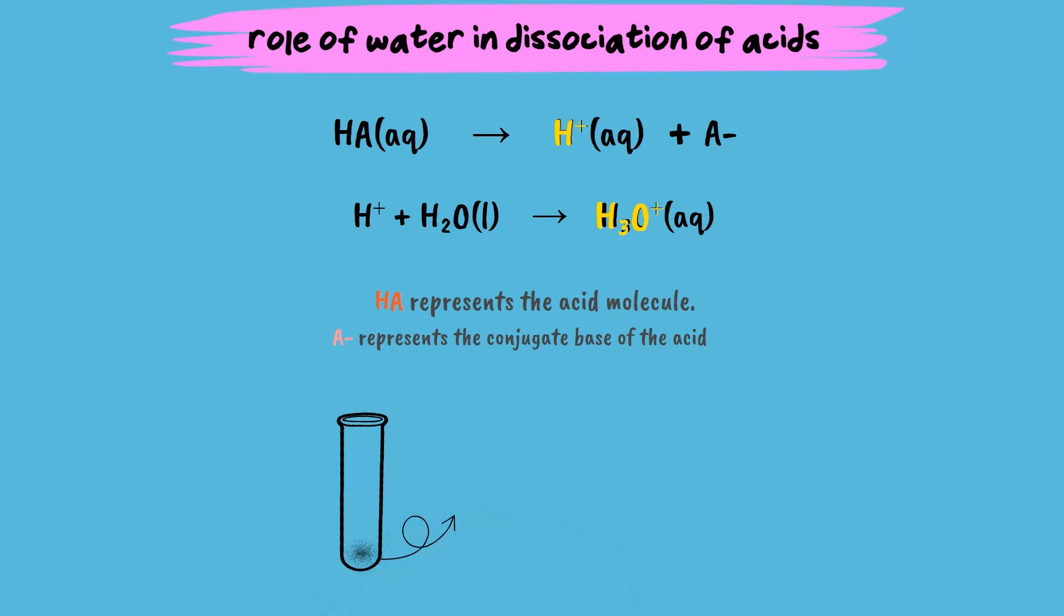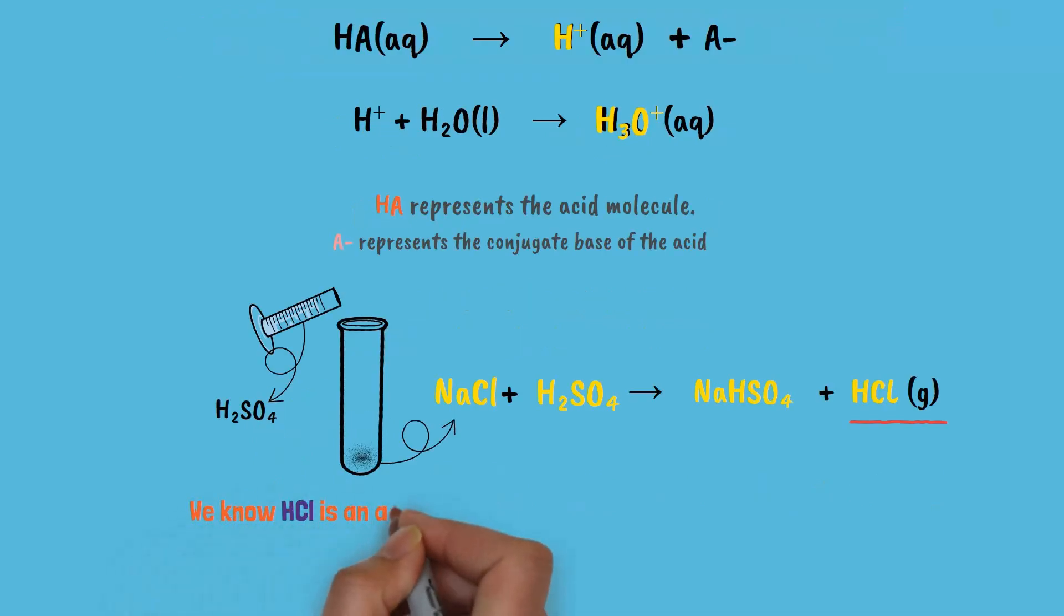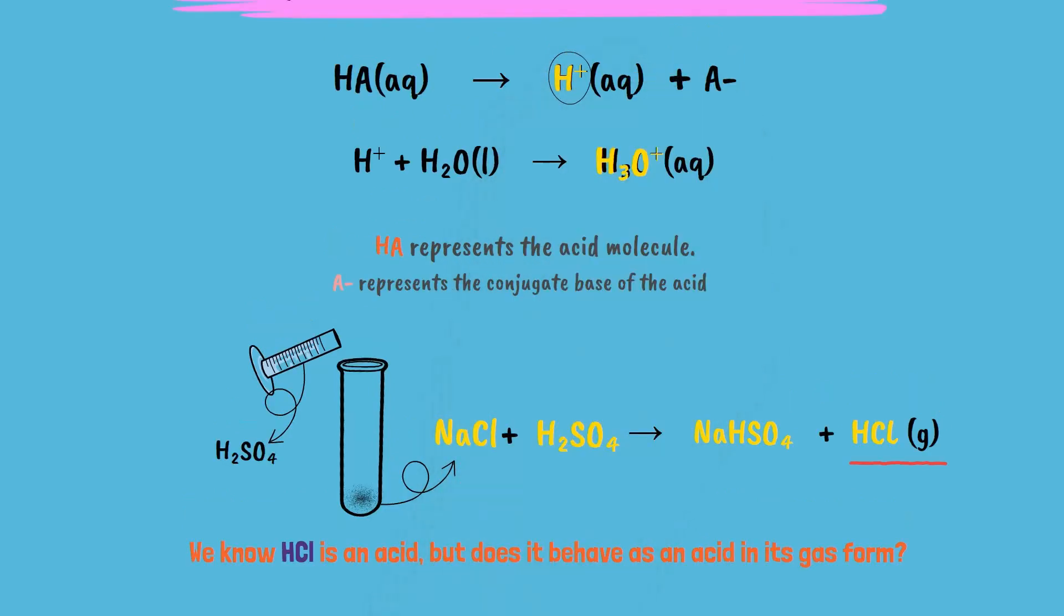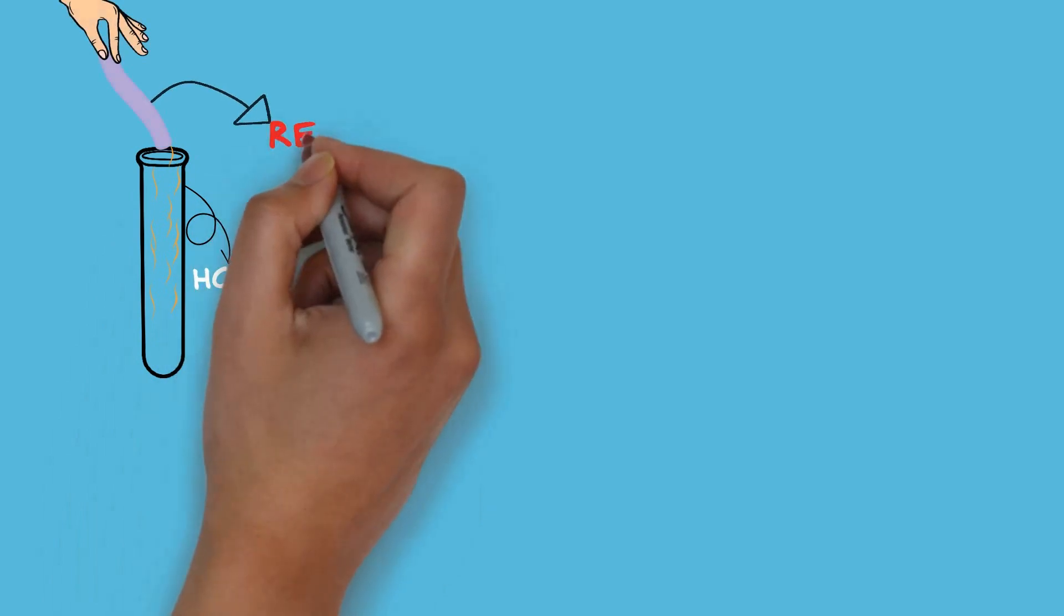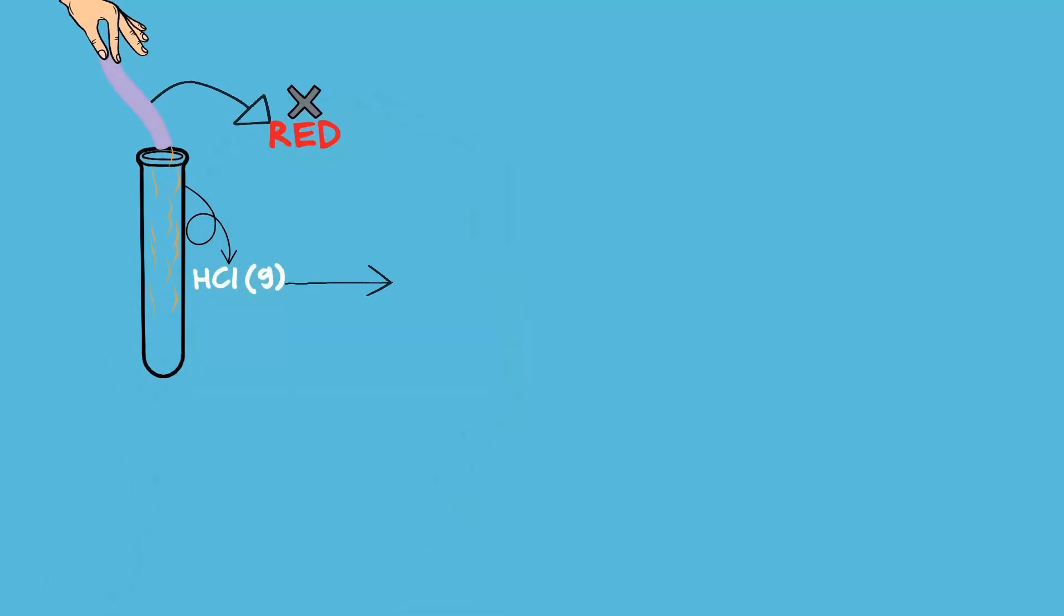When we take one to two grams of NaCl and add some concentrated sulfuric acid to it, it forms sodium hydrogen sulfate and hydrogen chloride gas, that is HCl. We know HCl is an acid. But does it behave as an acid in its gas form? Well, we know acids form H-positive ions in water. When we test HCl gas with dry litmus paper, it does not turn red, meaning that HCl gas is not an acid.